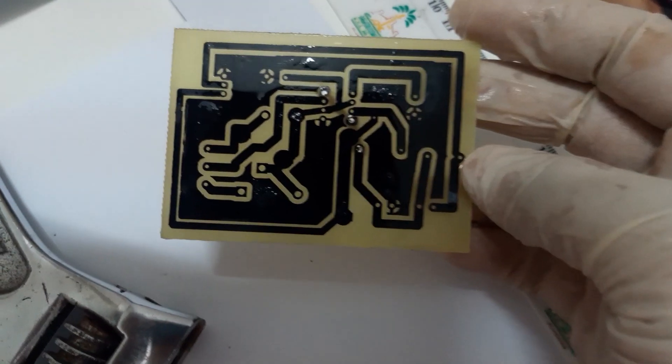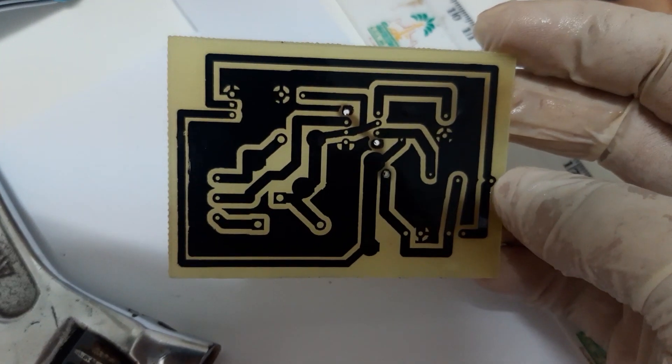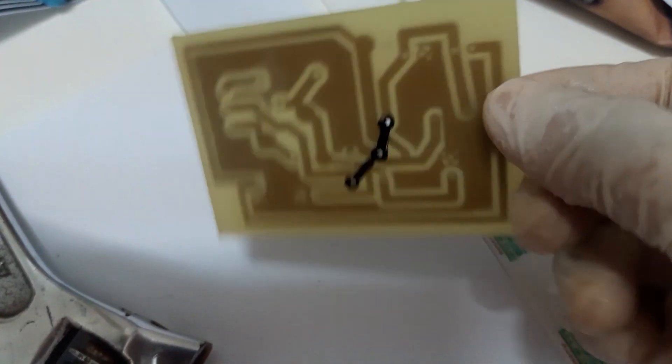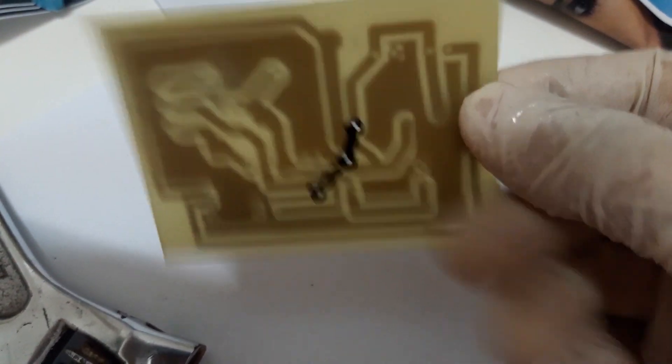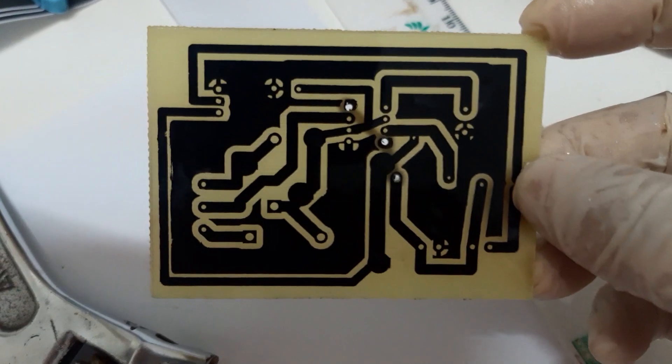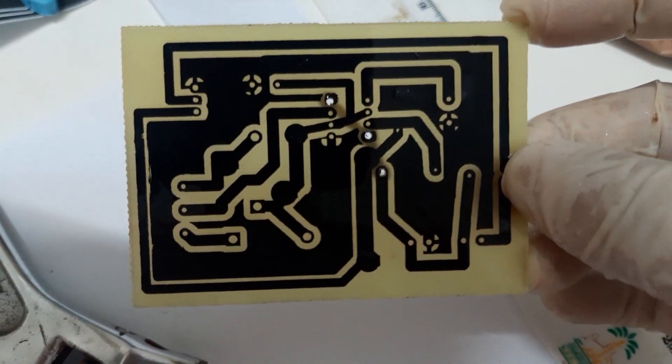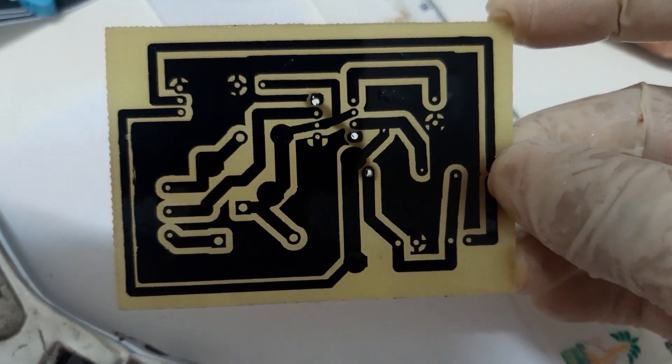Okay guys, so this is our PCB layout now. We will remove the black part or the ink so that it will reveal the real image on the PCB.